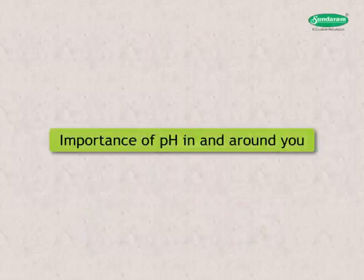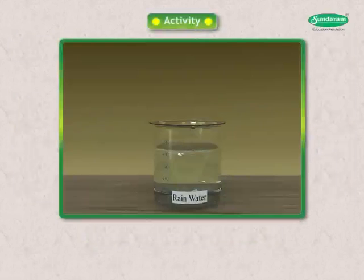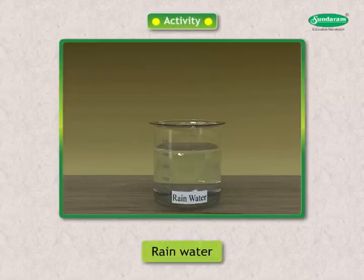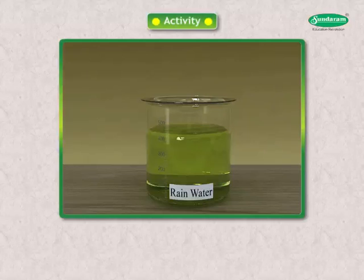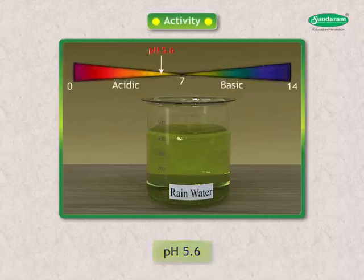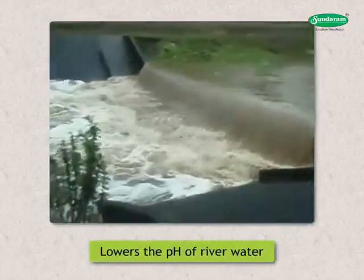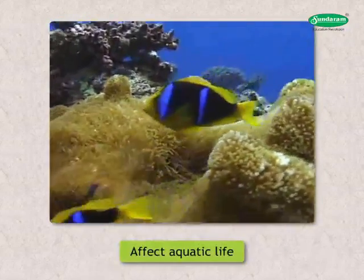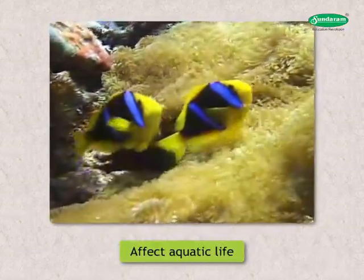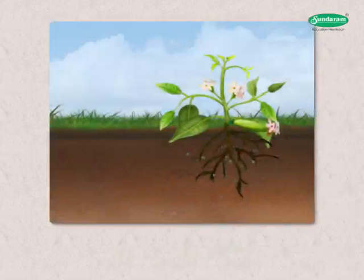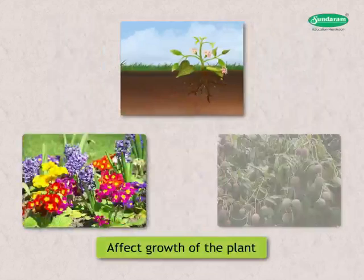Importance of pH in and around you. Collect a sample of rain water and add a few drops of universal indicator to it. Note the colour change and pH. The colour of water turns yellowish-green, indicating a pH of 5.6 — the nature of rain water is acidic. When the pH of rain water is less than 7 and it flows into a river, it lowers the pH of river water. Aquatic life is drastically affected due to this acidic nature. When this type of rain water is absorbed by plants, it affects their growth, the flowers and fruits they bear, etc. The human body works within a pH range of 7.35 to 7.45.